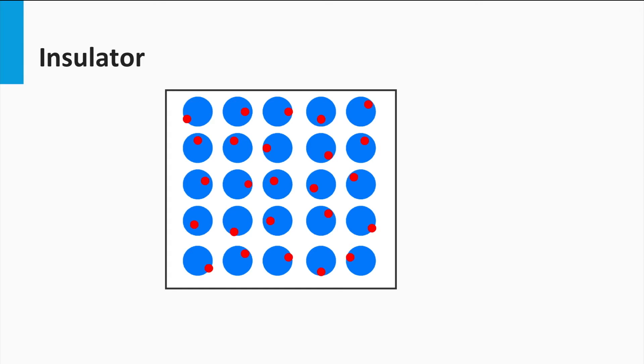Materials which do not conduct electricity are called insulators. In insulator materials, the ocean of free-moving electrons are missing. All electrons are bounded to the background atoms. As you can see in the figure, the red dots represent the electrons and are glued to the blue atoms.